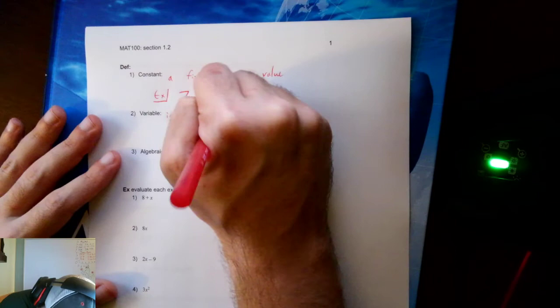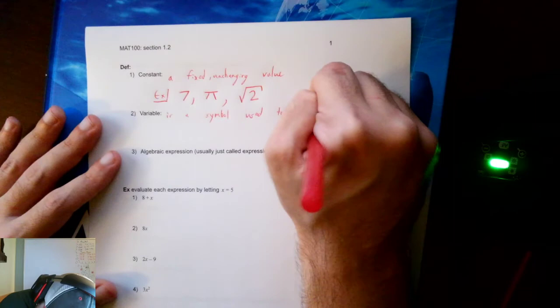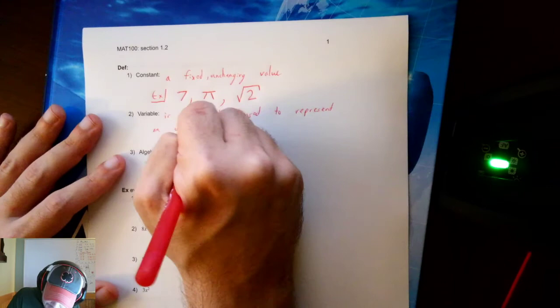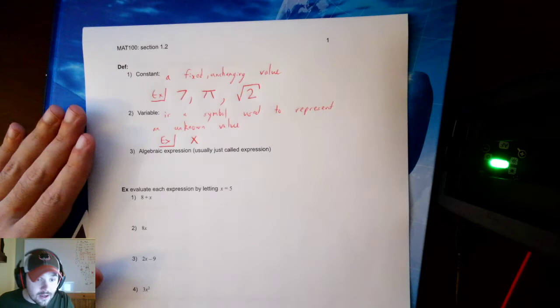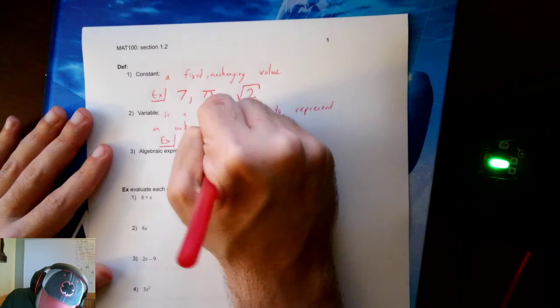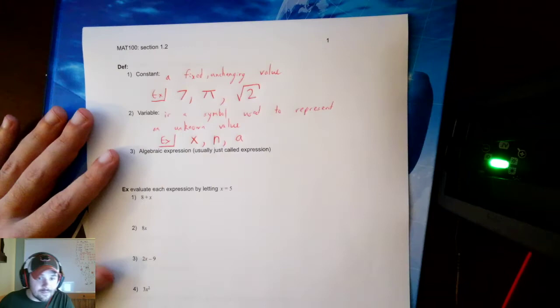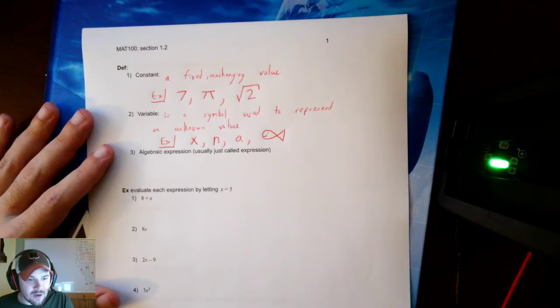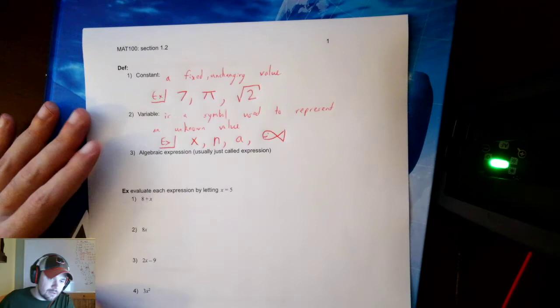Whereas a variable is a symbol used to represent an unknown value. Examples? In math, we love to use the letter x. The reason for that tends to be because x is the least popular alphabetic letter. It shows up in the least number of words. It stands out on its own. Other common numbers are n, good number for a number. Sometimes we'll use whatever letter you want. You can use any symbol. You could use a drawing of a cartoon fish as your variable if you wanted to. You can use any symbol as long as you're consistent in using that symbol.